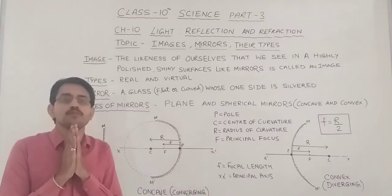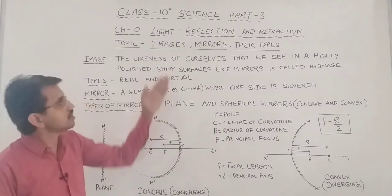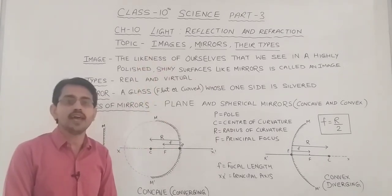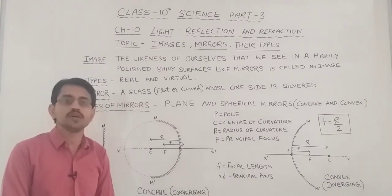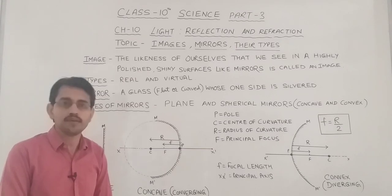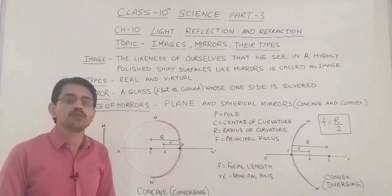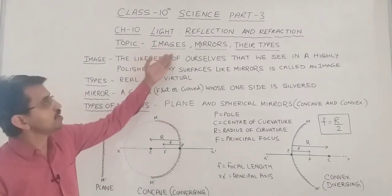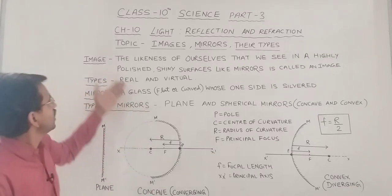Welcome to RSV Group of Schools YouTube channel. This is Part 3 of Chapter 10 - Light Reflection and Refraction from Class 10 Science. In the previous two parts, you must have learned about the characteristics of light, reflection, its definition, types, and laws. Moving further, in this part of the video I will talk about mirrors, images, and their types in detail.